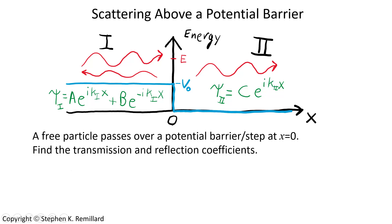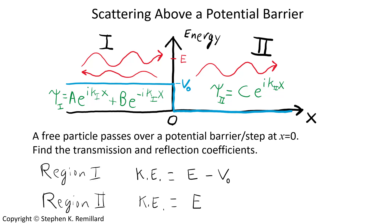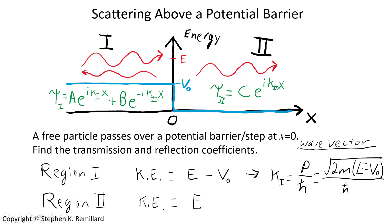Let's figure out these wave numbers in the two regions. They come from the kinetic energy of the wave, which is presumably a particle. In region one, the kinetic energy is the total energy of the wave minus the potential energy. In region two there is no potential energy, so the kinetic energy equals the total energy. The wave numbers are momentum over h-bar: in region one, k1 equals the square root of 2m times kinetic energy over h-bar, and in region two, k2 equals the square root of 2m times kinetic energy over h-bar. We now have preliminary expressions for the wave functions with coefficients a, b, and c.